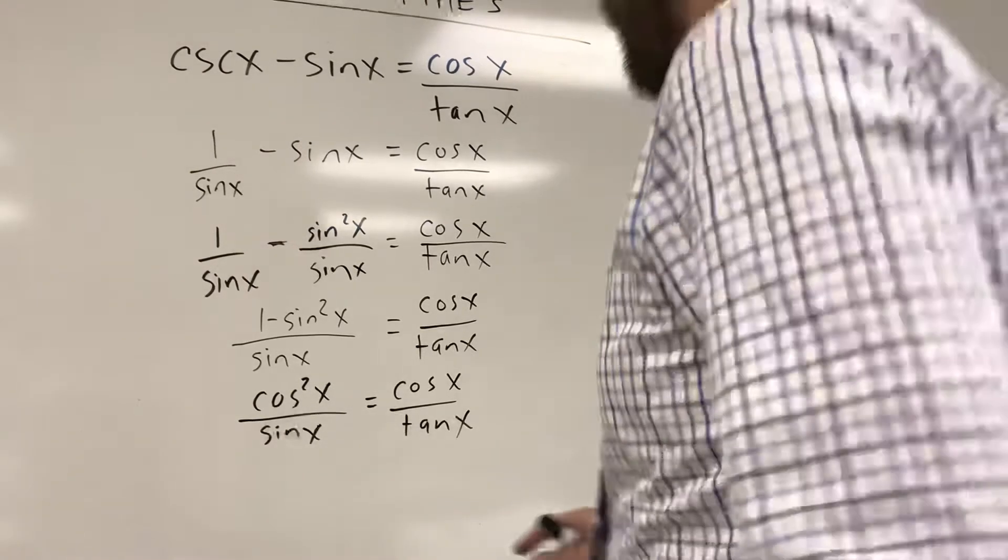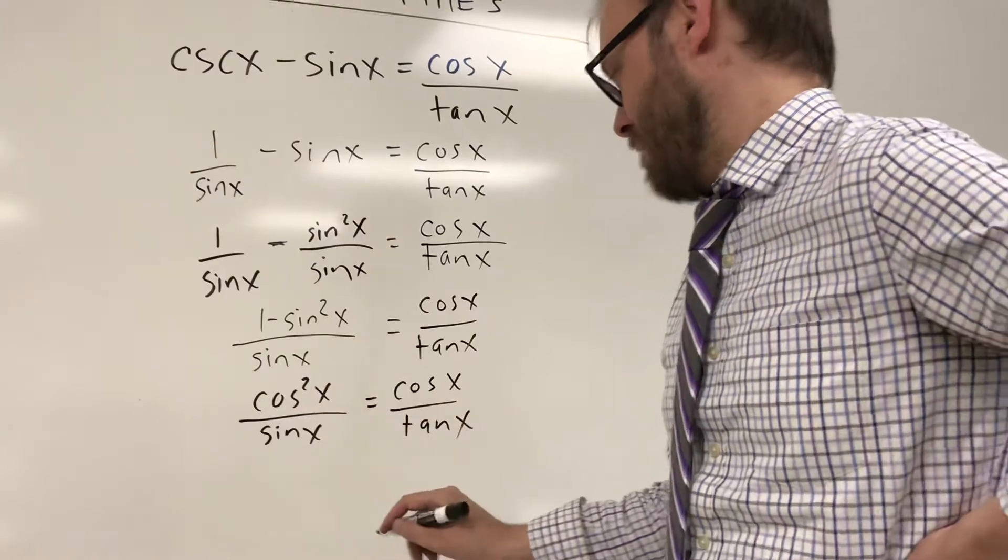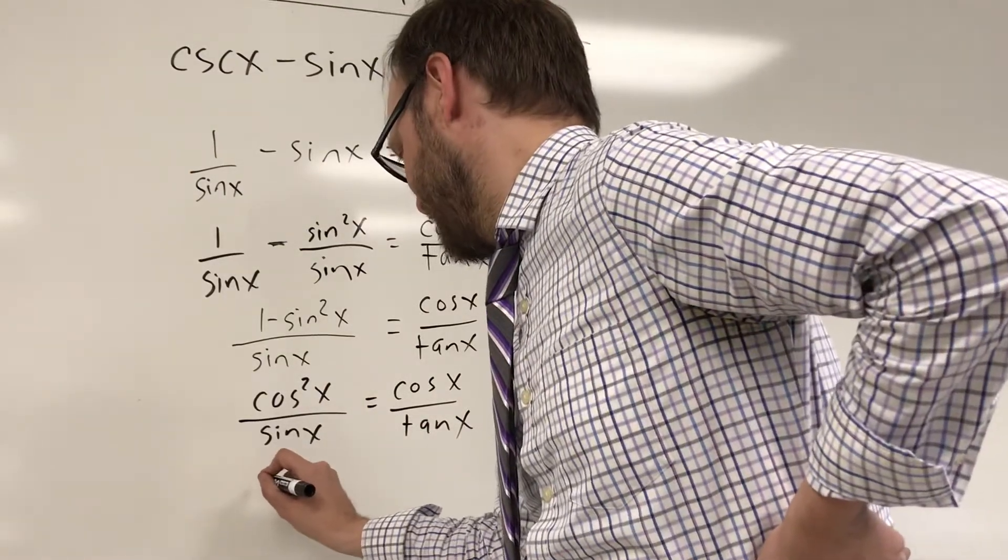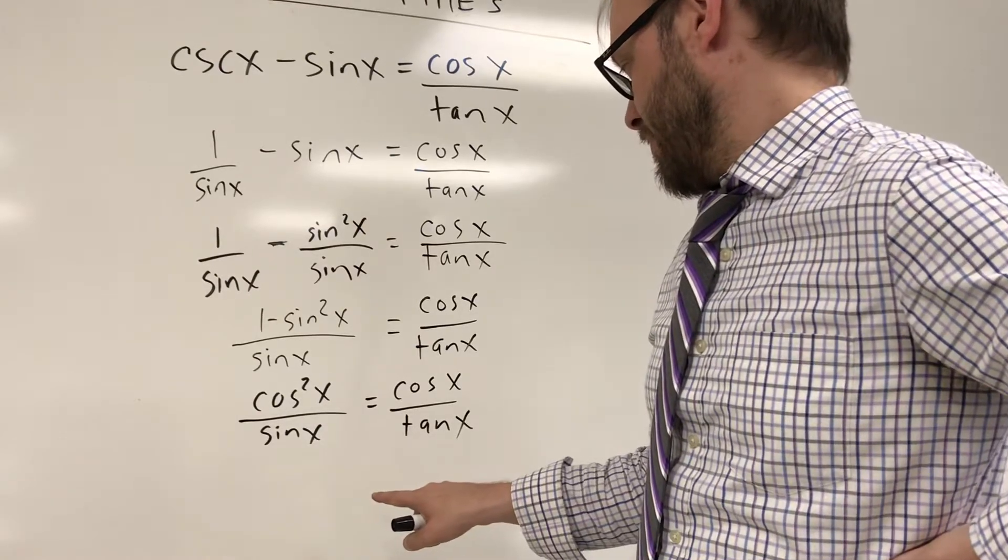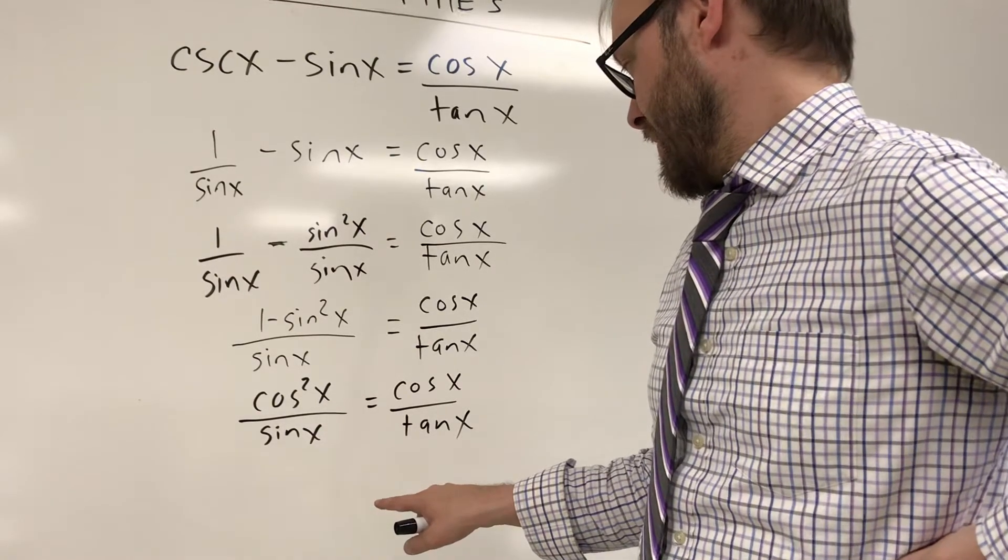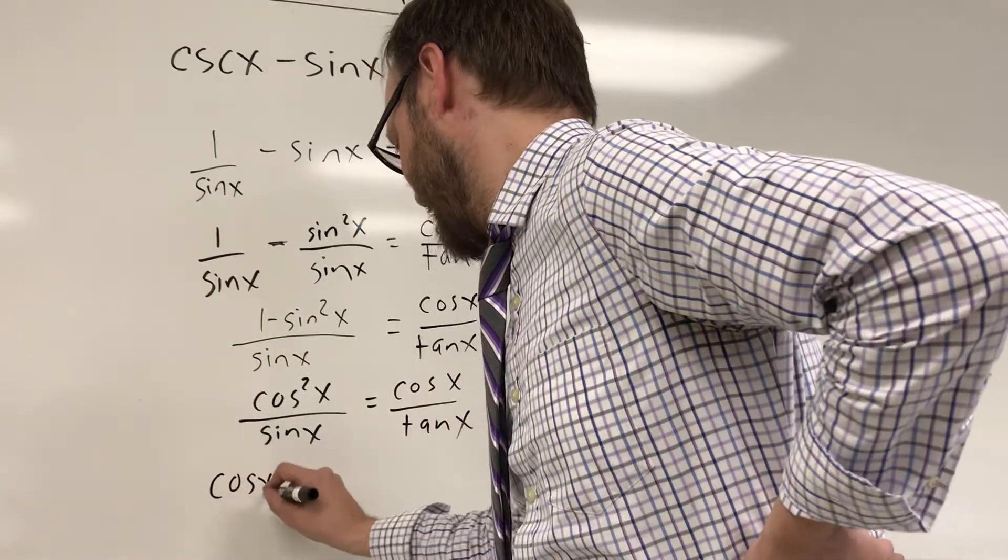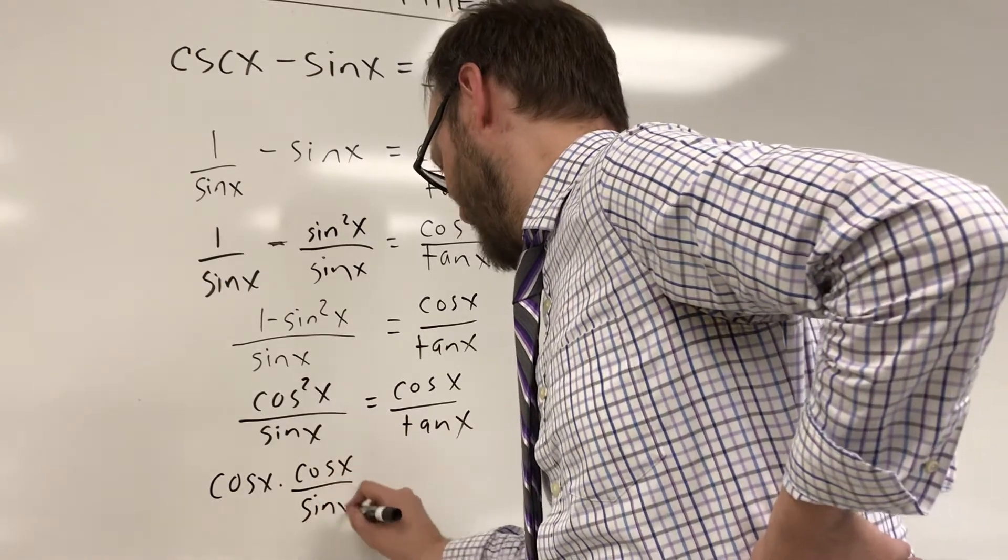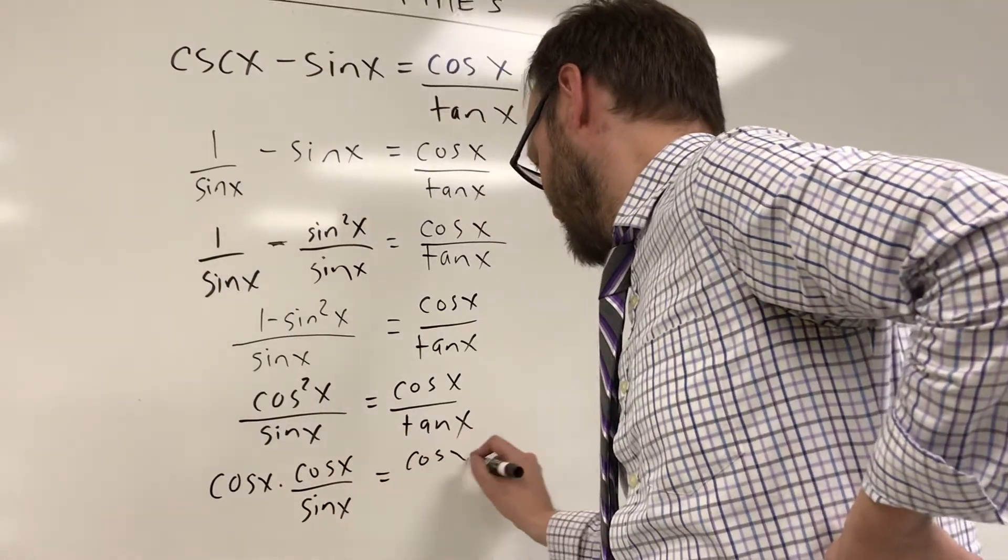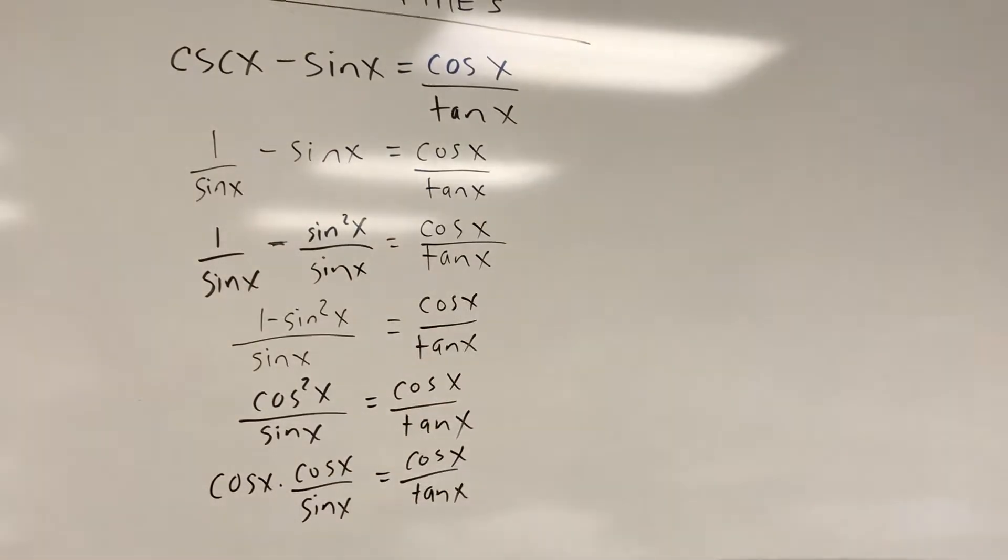So this is the same thing as cosine times cosine on top. So I can write this as cosine of x times cosine of x over sine of x and that's equal to cosine of x over tangent of x. And I'm running out of space here. So I'm gonna go to another column.